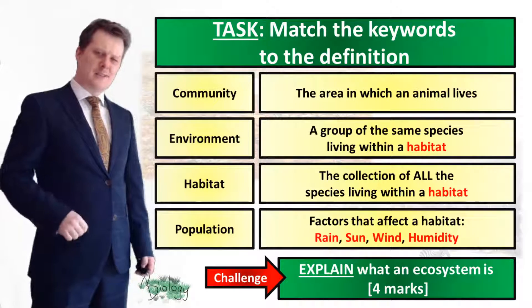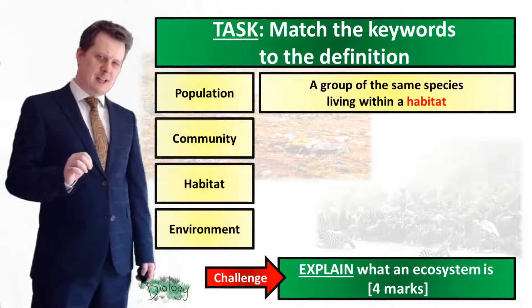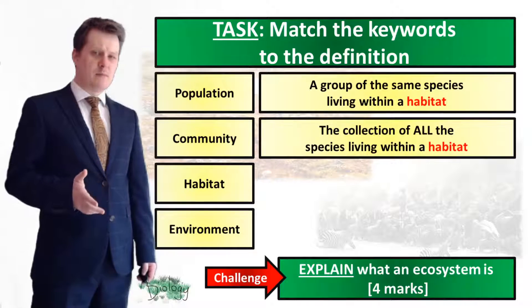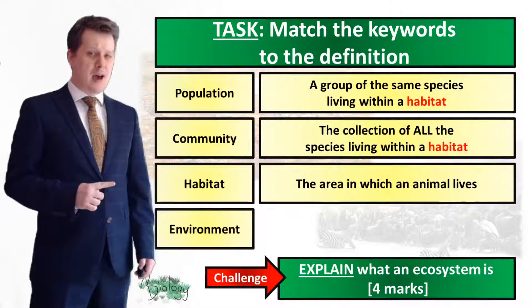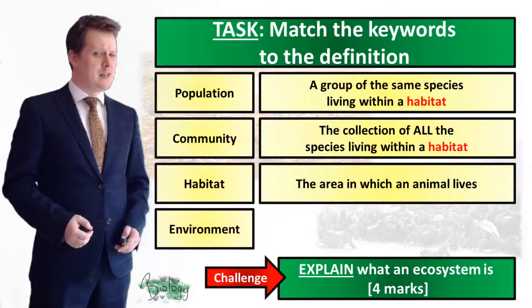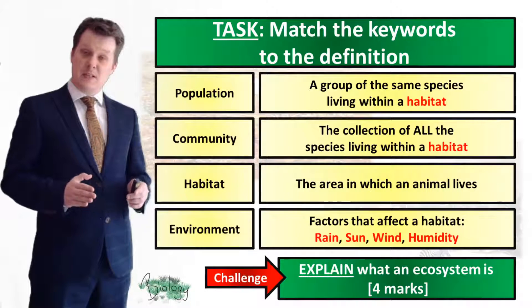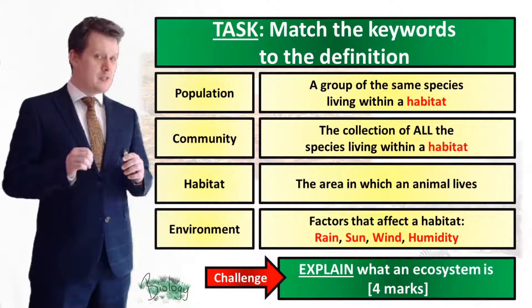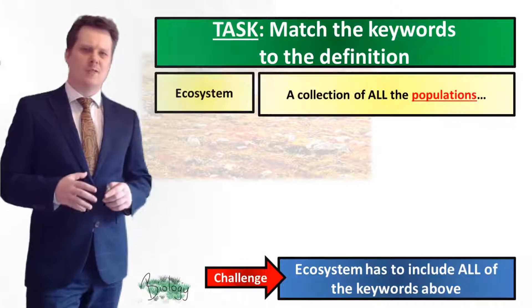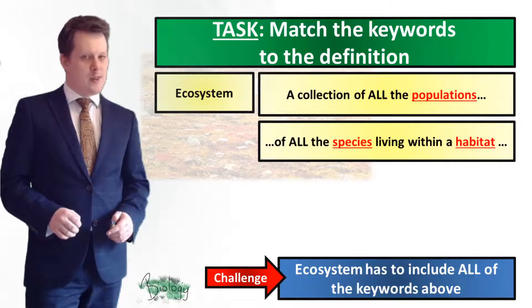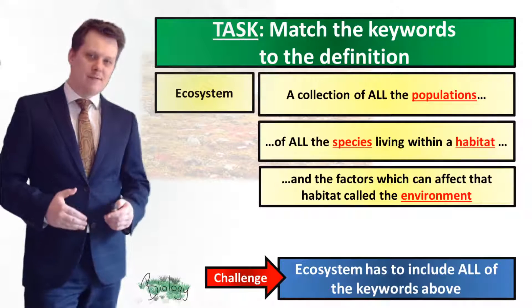Let's start with population — this is a group of the same species that live within a habitat. A community is a collection of all the species that live within a habitat. The habitat itself is the area in which the animals live, and the environment are all the factors that affect a habitat. If you've explained what an ecosystem is, it is important that you mention all four of these things. An ecosystem is a collection of all the populations of all the species that live within a habitat, and the factors that can affect that habitat, which we call the environment.